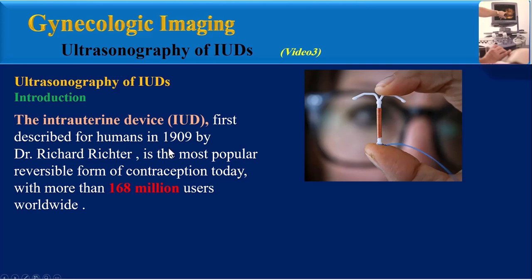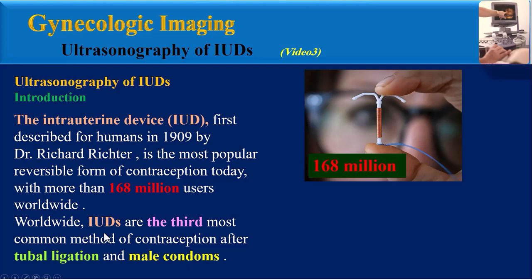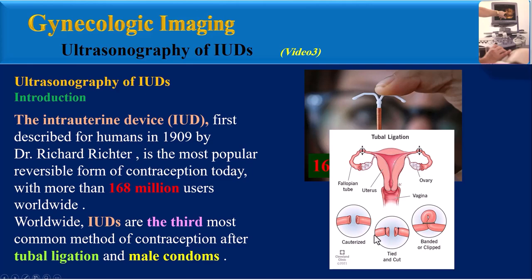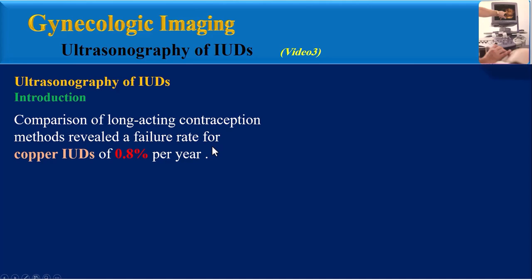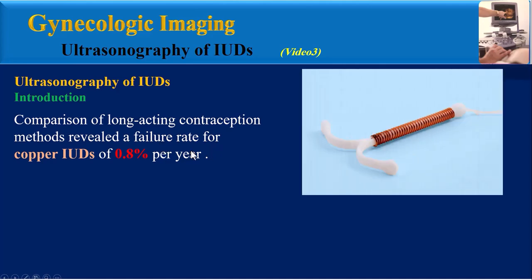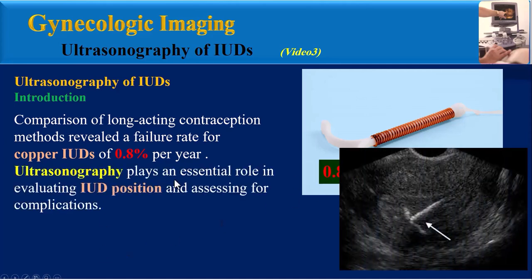The IUD is the most popular reversible form of contraception today, with more than 168 million users worldwide. IUDs are the third most common method of contraception after tubal ligation and male condoms. Comparison of long-acting contraception methods revealed a failure rate for copper IUDs of less than one percent per year.